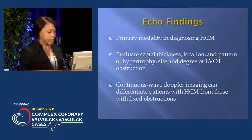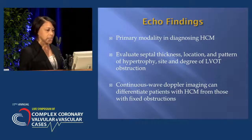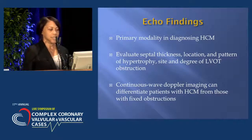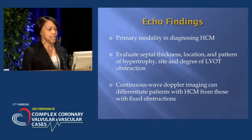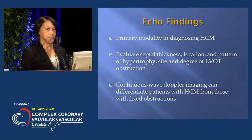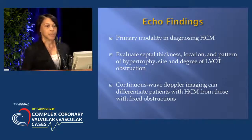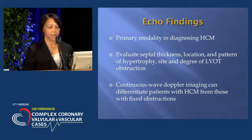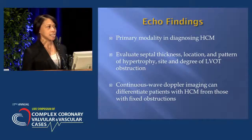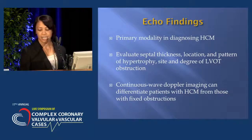Echocardiograms should be the primary imaging modality when diagnosing hypertrophic cardiomyopathy. They can evaluate the septal thickness, the location and pattern of hypertrophy, and the site and degree of the LVOT obstruction. Continuous wave Doppler imaging can differentiate patients with hypertrophic cardiomyopathy from those with fixed obstructions such as valvular aortic stenosis.